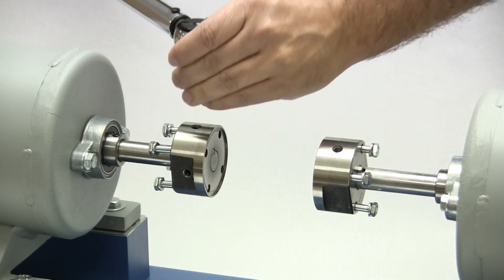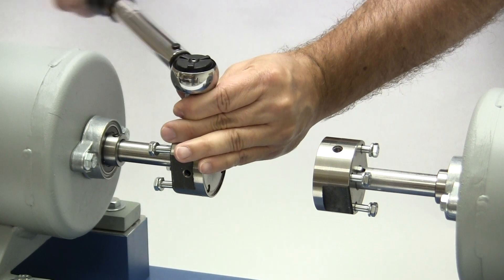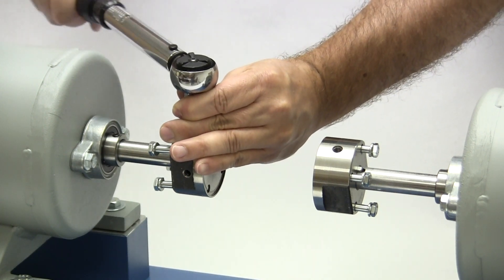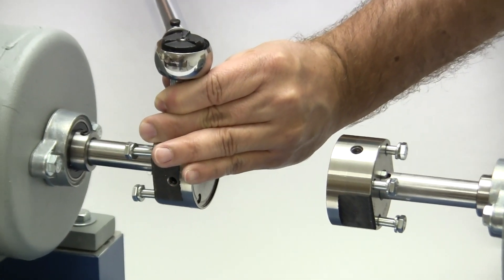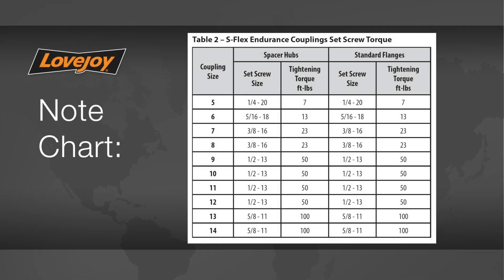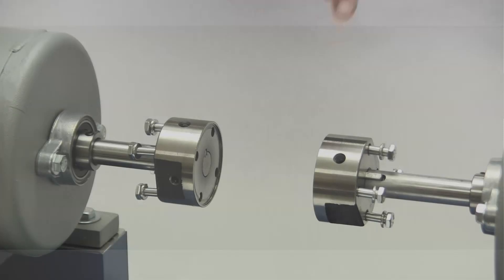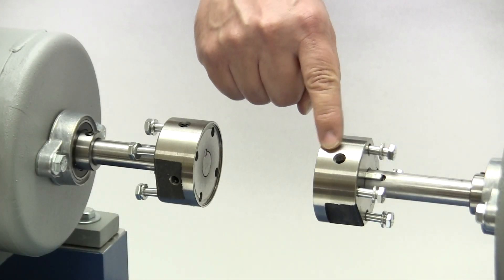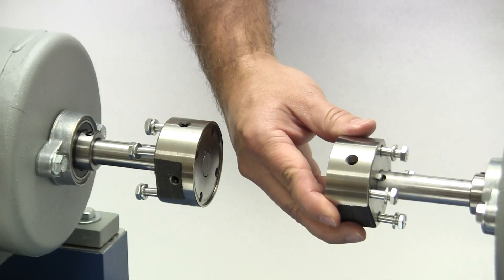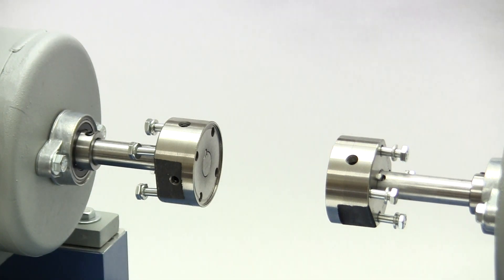With a calibrated torque wrench, tighten the set screws in the first hub using the torque specified for spacer hubs in the installation guide. The use of a torque wrench is important. If the set screws are not tightened properly, the spacer hub and flange could work loose and slide on the shaft. For now, we will leave the set screws on the second spacer hub loose to allow us to move the hub to clear the pilot when installing the center sub-assembly.